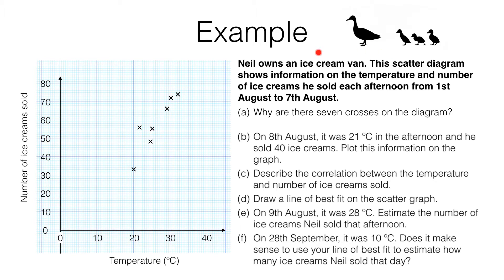Let's take a look at the example. Neil owns an ice cream van. This scatter diagram shows information on the temperature and number of ice creams he sold each afternoon from the 1st of August to the 7th of August.